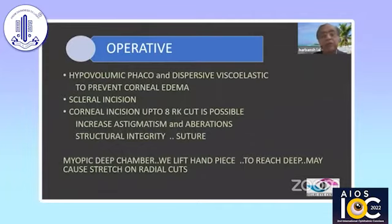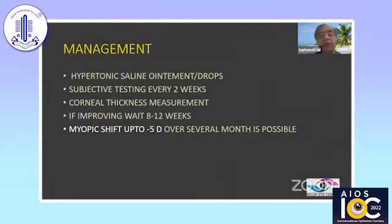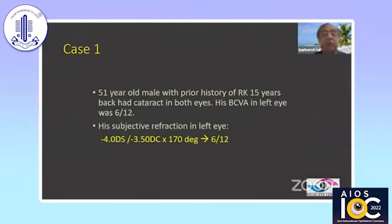I will not go into much detail of the operative because the surgery itself is simpler. But postoperatively, you need to look out for transient corneal edema. If your patients are hyperopic by 3–4 diopters, don't get worried. Keep on examining these patients every two weeks and measure corneal thickness to see whether the cornea is becoming less edematous and whether the hypermetropia is going down. Only if after 2–3 weeks there is no change should you consider it permanent hyperopia. A myopic shift of 4–5 diopters in 2–3 months is very much possible, so do not panic if the patient is immediately postoperatively hyperopic.